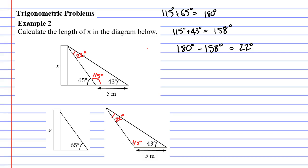Now I reckon I'm going to label this side with Y. If I can figure out what that side is then I can figure out what X is. The reason I've picked this side is it's the same as the side over here on the non-right angle triangle. This is really useful because if I look at my non-right angle triangle I have three angles and two sides — I actually only need two angles and two sides.